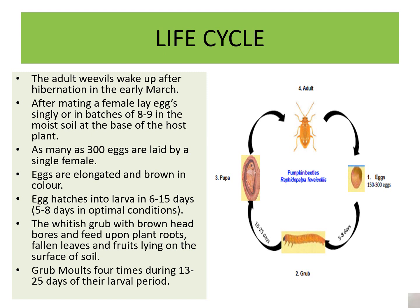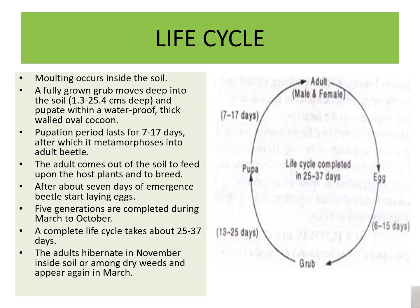Eggs hatch into larvae in 6 to 15 days. The whitish grub with a brown head bores and feeds upon plant roots, fallen leaves, and fruits lying on the surface of the soil. The grub molts 4 times during a larval period of 13 to 25 days, with molting occurring inside the soil. A fully grown grub then moves deep into the soil, 1.3 to 25.4 cm deep, and pupates within a waterproof, thick-walled cocoon.